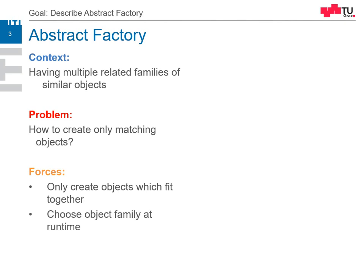We want to choose the object family at runtime, because if you already know at compile time which family you need, you don't need it that flexible — but very often we don't know that. And we want to reveal just the interfaces, not the implementation. This is a general principle behind many design patterns, and here especially we apply it.